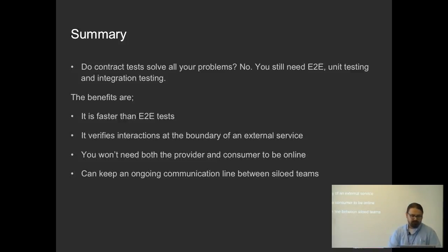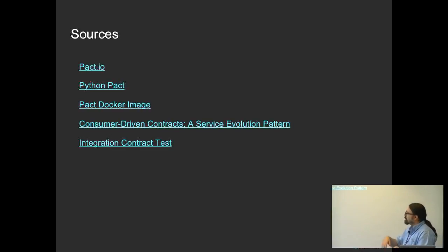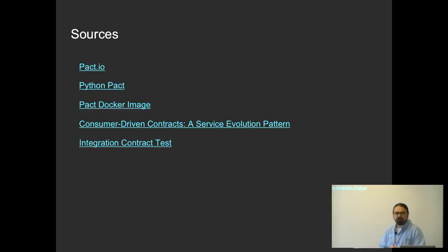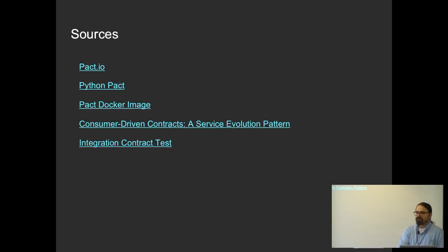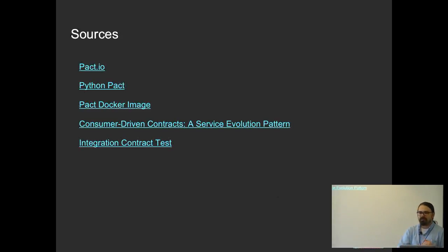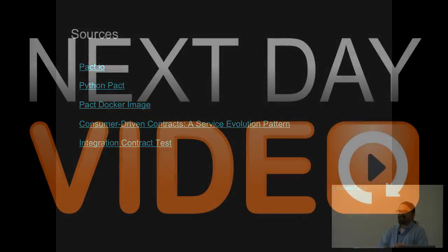That's my time. I have some sources here — the last two links are Martin Fowler's website, definitely check it out. I've also linked Pact.io and Python Pact. Pact has a Docker image you can deploy and have the service up and running to start testing your APIs against it. Thank you for your time — in 20-minute sessions we don't have Q&A, but feel free to talk to me later.